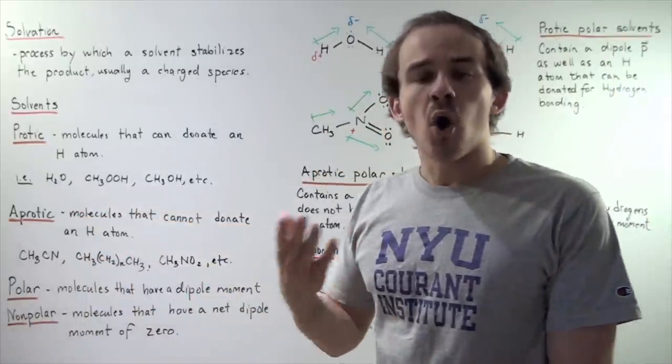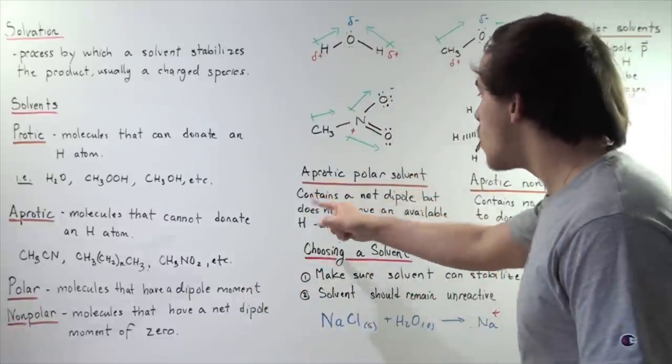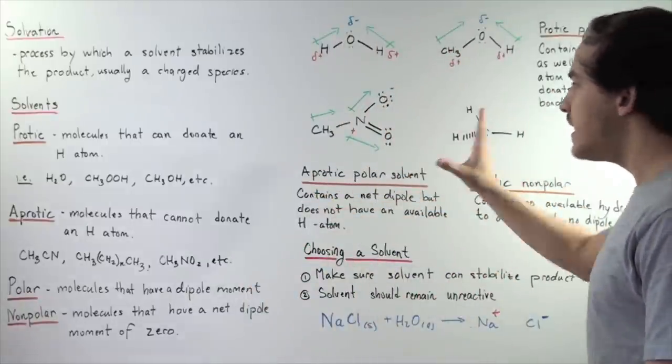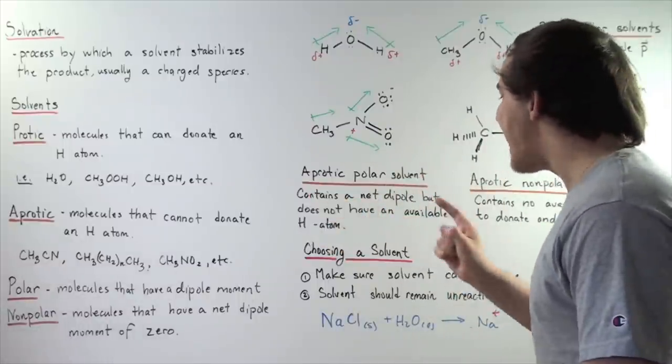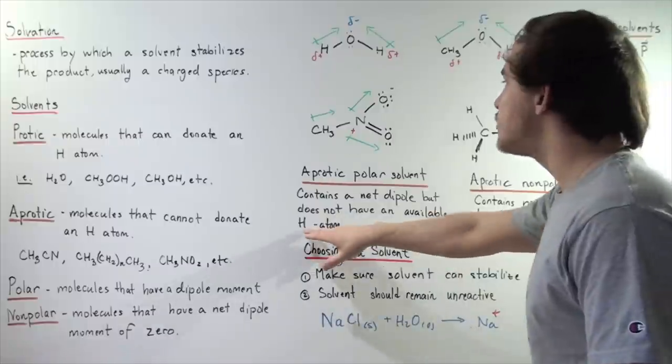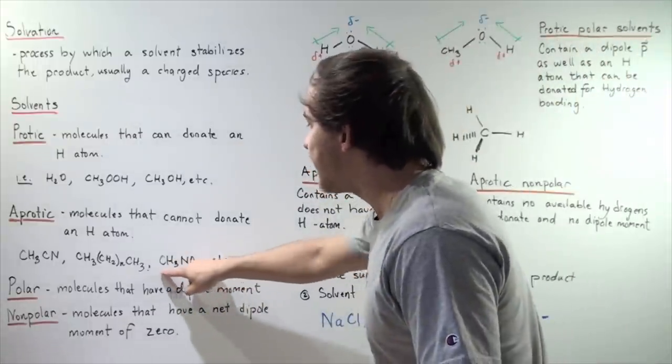Now, aprotic solvents can be both polar as well as nonpolar. So let's look at the aprotic polar solvent. These solvents contain a net dipole moment but do not have an available H atom. So, this is one example which is given here, nitromethane.